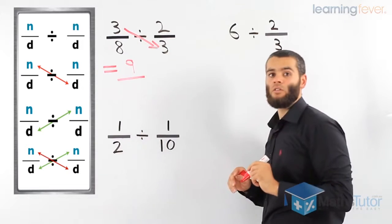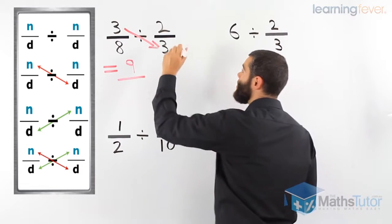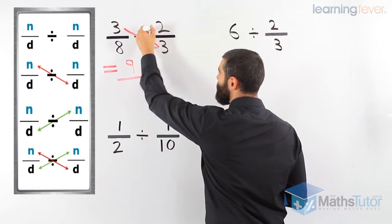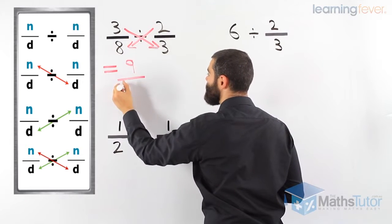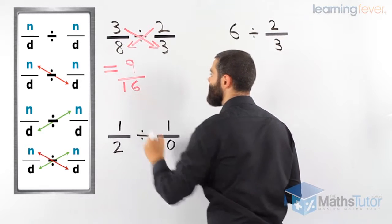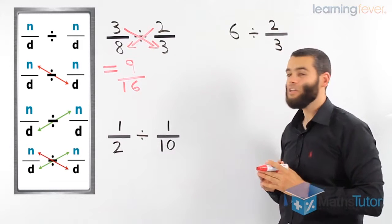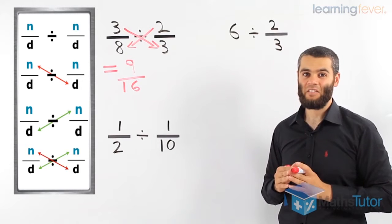And then we go and multiply the second numerator with the first denominator, 2 times 8, 16. So, our final answer, it can't be simplified anymore, 9 over 16.